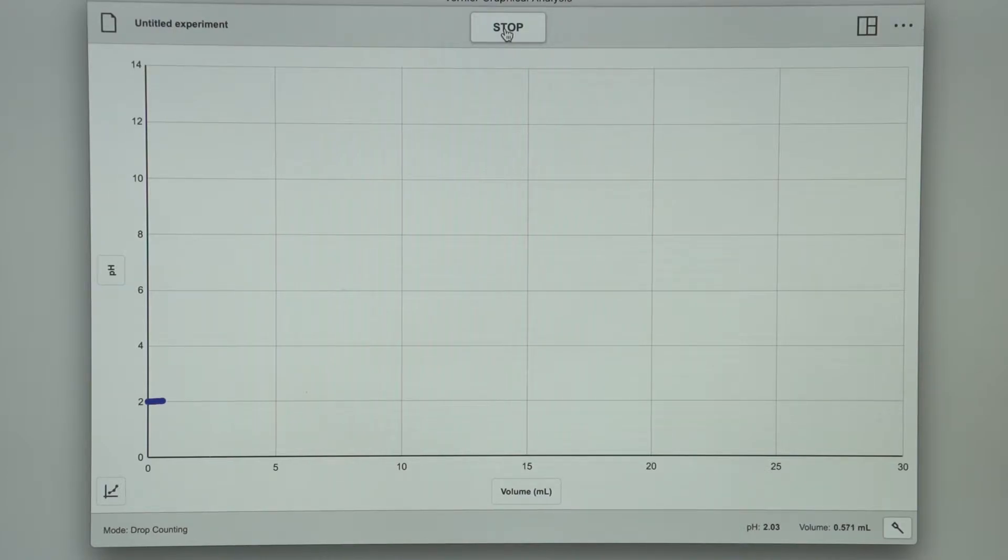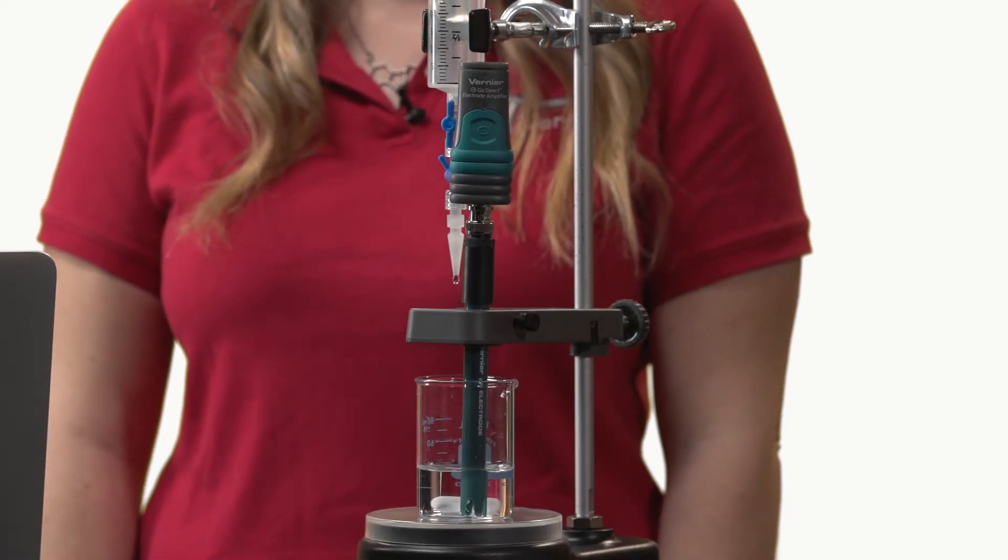The drops should be coming out at about one per second. The slower the drops, the better the titration data.